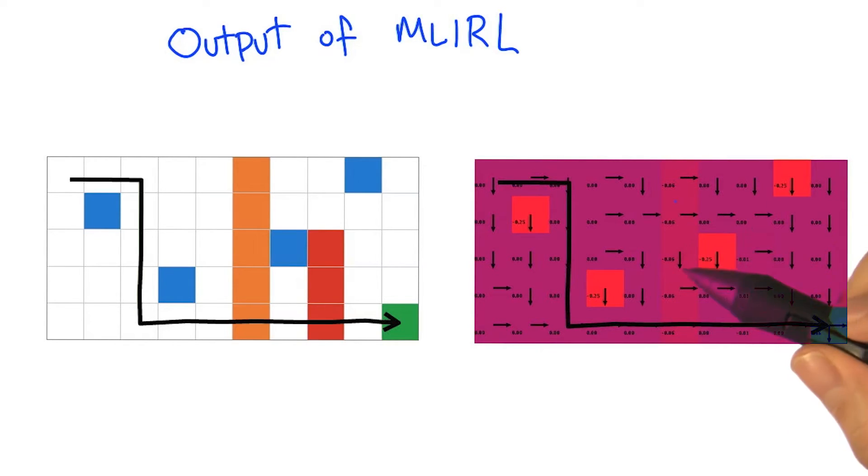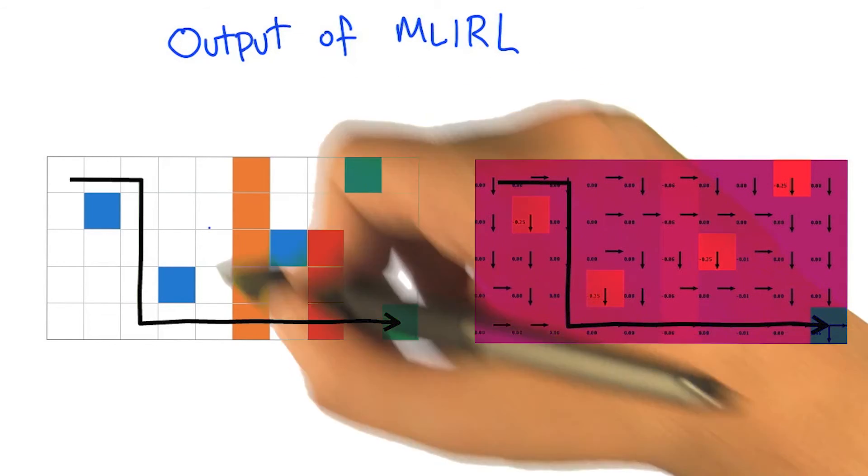If we gave it a bunch more examples and we could see whether the orange really was consistently a good thing or a bad thing, it would get fixed with more training data. But it's pretty neat how much it can pull out of actually one single example.